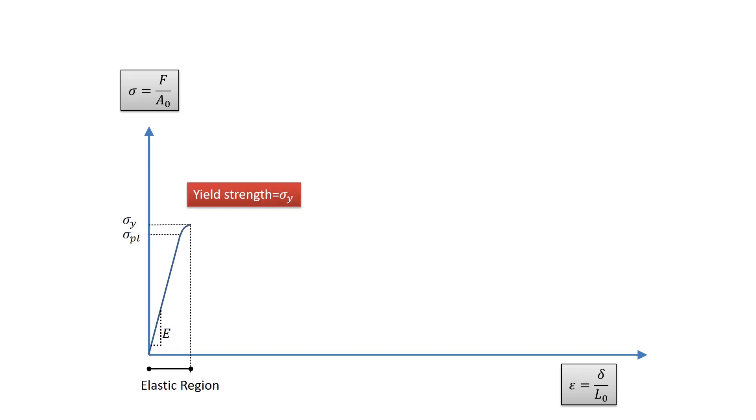Slightly higher than the proportional limit is the elastic limit, the yield stress, or the yield strength, which marks the end of the elastic region. In the elastic region of the curve, the specimen returns back to its original length if the load is removed.